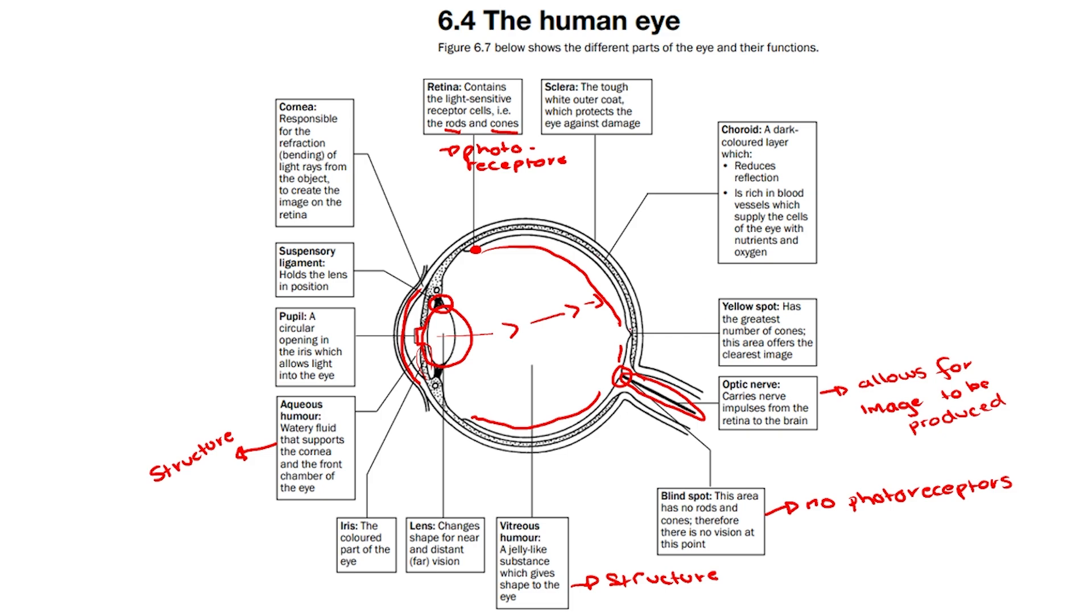We then have the yellow spot, which is this tiny indentation over here. The yellow spot has the greatest number of cones, and this area offers the clearest image.